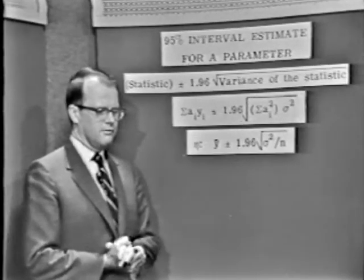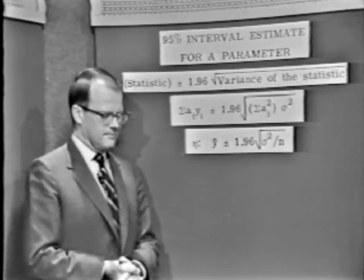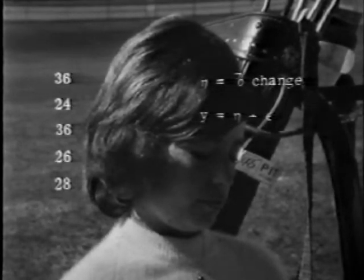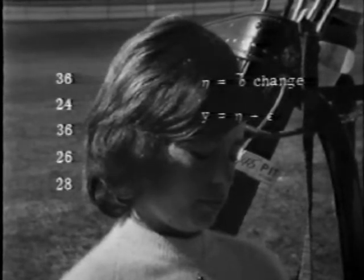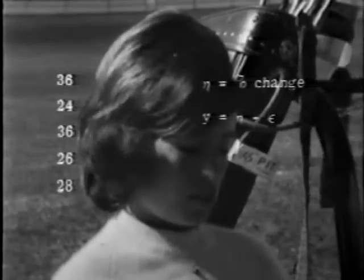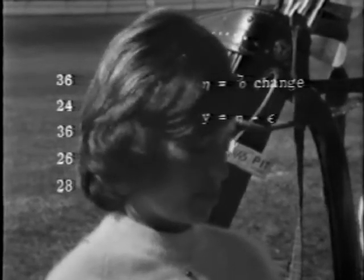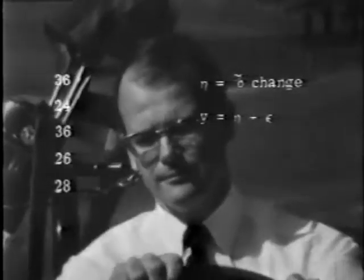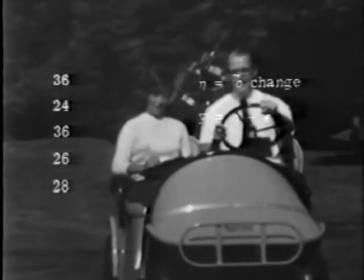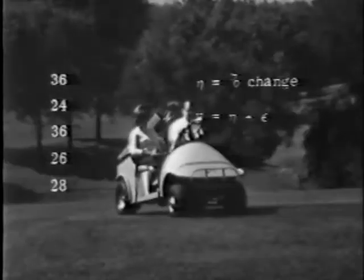Now we ought to get some data to get off the ground. The data are: 36, 24, 36, 26, and 28. That was the afternoon we were out collecting data on the charge on the golf carts — recording the charge left in the batteries after the completion of two rounds of golf. That was a very interesting data collection exercise; we had to play 10 rounds of golf to get all the data. Our problem now is to make some sort of statement about the charge remaining after the completion of two rounds of golf.